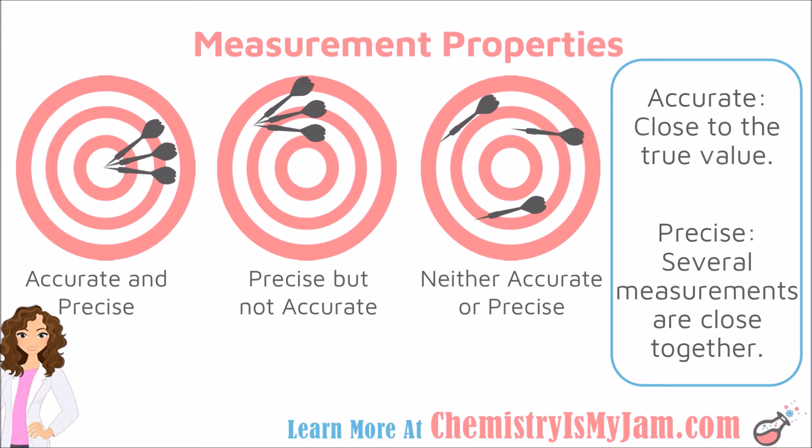Precise means that several measurements are close together. So, if we stick with our dartboard analogy, a precise thrower is one where every dart they throw is hitting the same place.